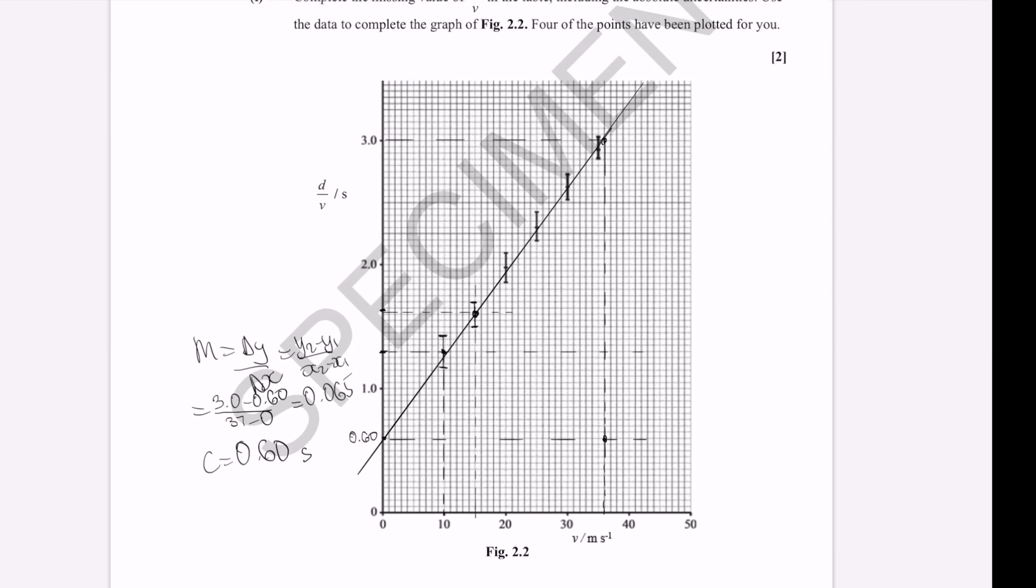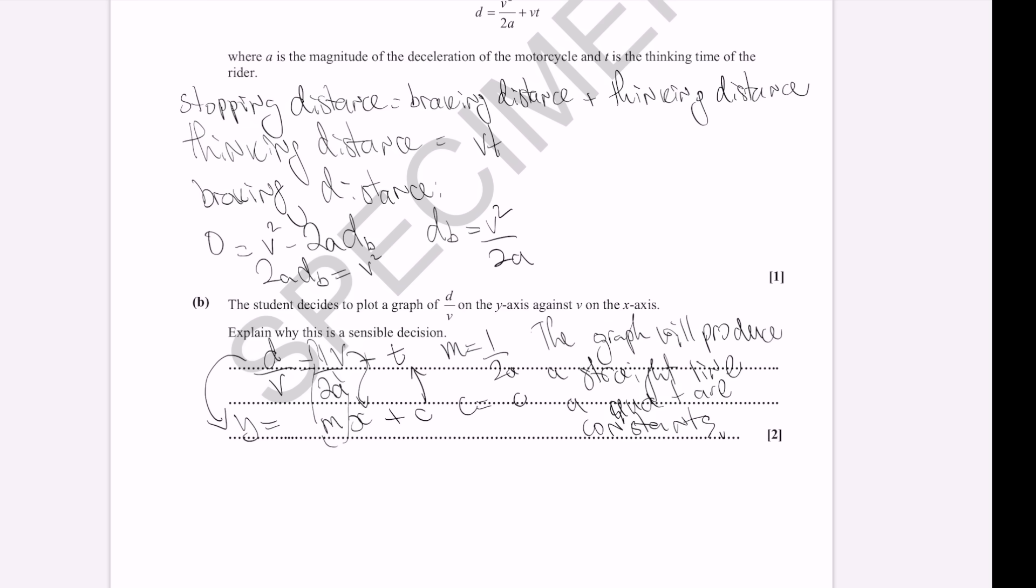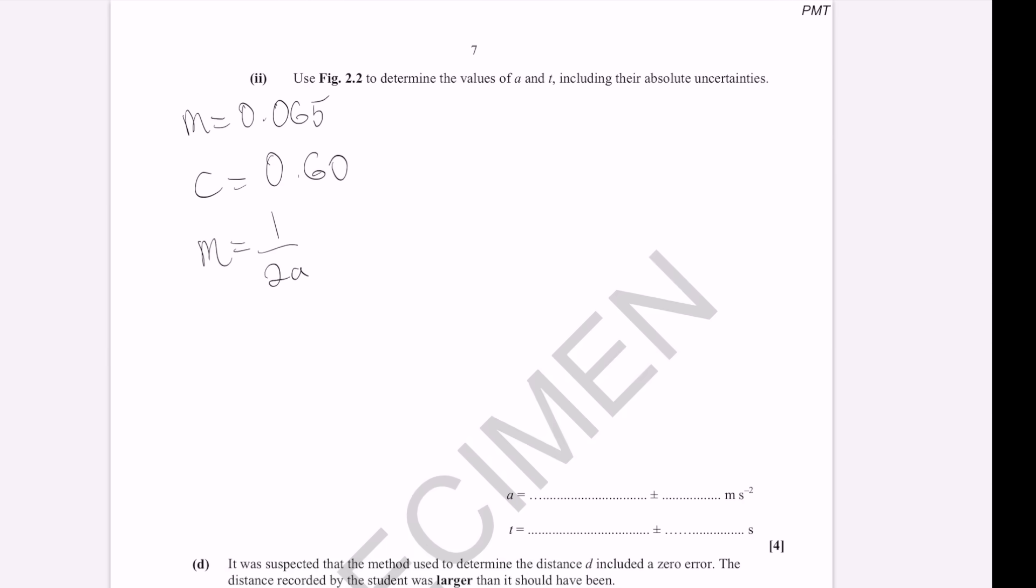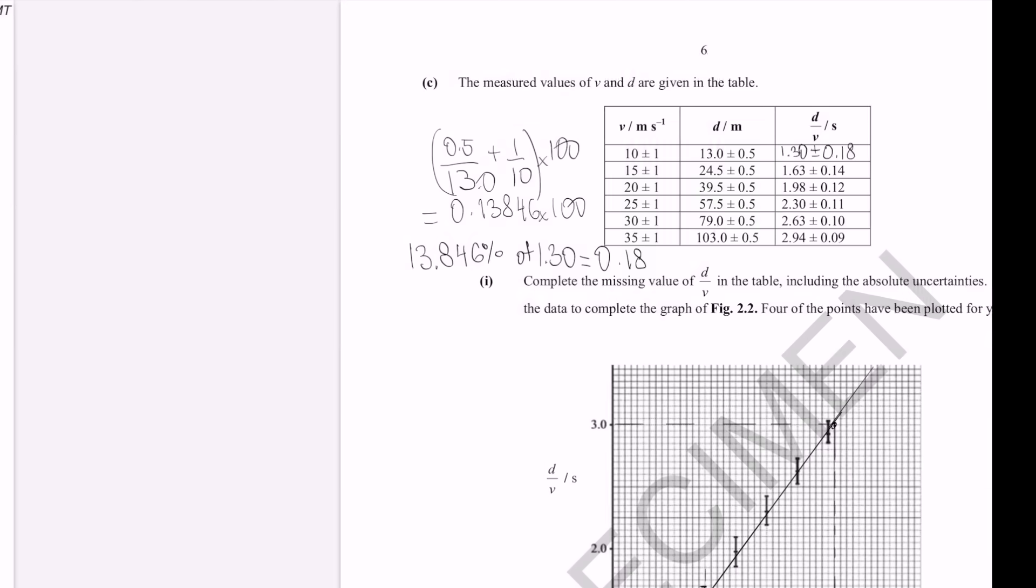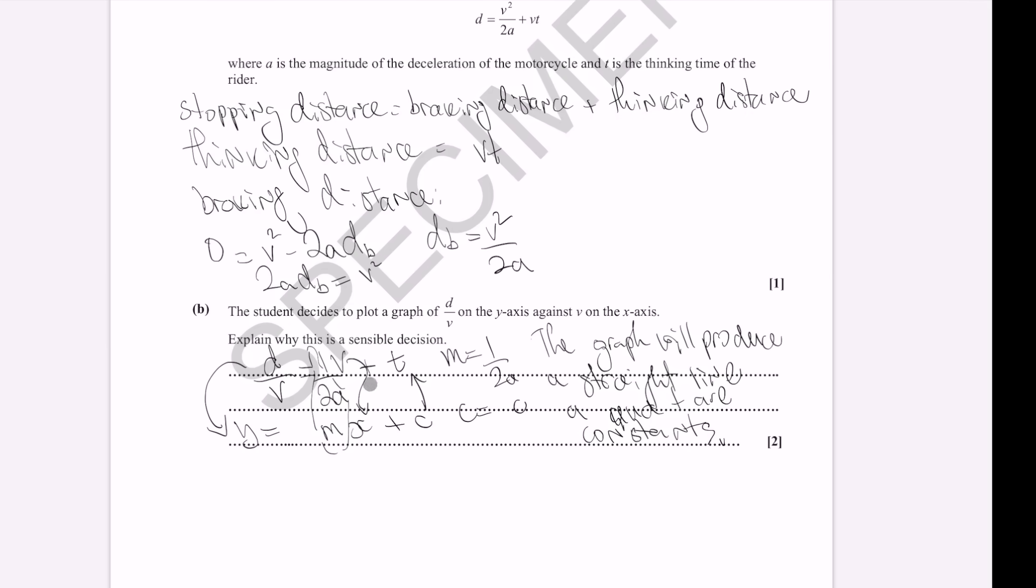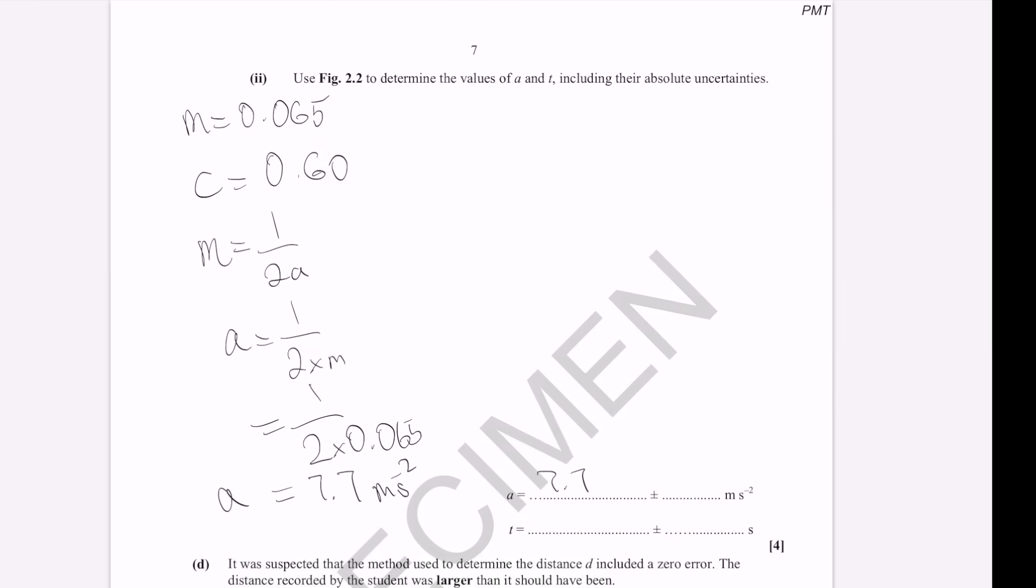So, we can actually see that my gradient is equal to 1 over 2A in the previous part of the problem. So, we can work out the acceleration, which is going to be 1 over 2 times the gradient. This here is going to give us 7.69. Let's call it 7.7 meters per second squared. And we'll talk about the uncertainty in that value in a minute. Now, our time was basically the intercept, wasn't it? So, this here will just be around 0.60.